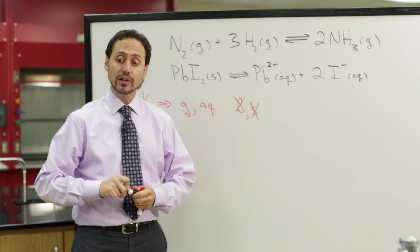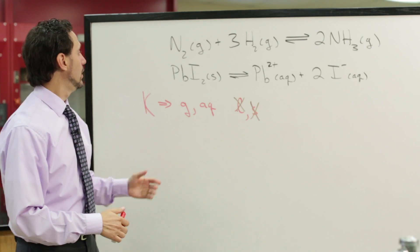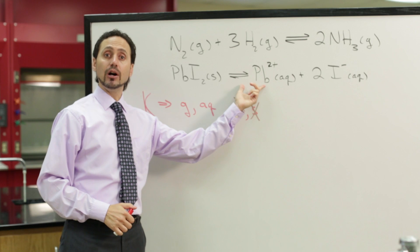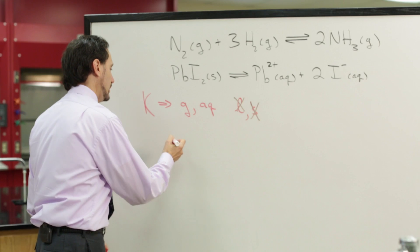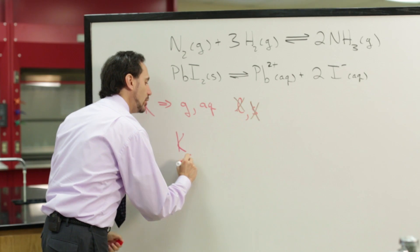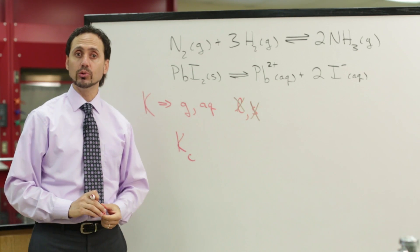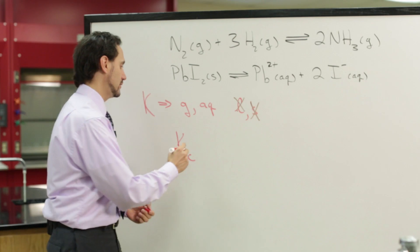So if we do that for this second equation, what would be the equilibrium constant expression for this second equilibrium? We'll just go ahead and use K sub C, assuming we know the concentrations of the products and the reactants.